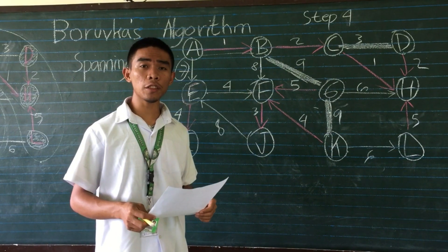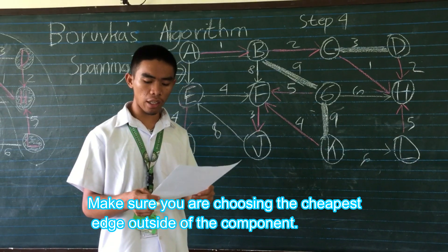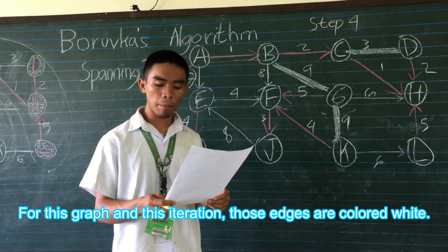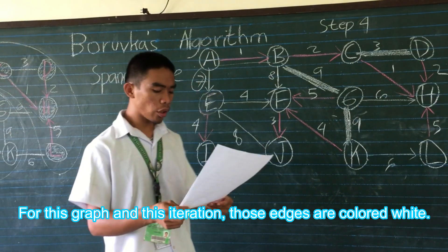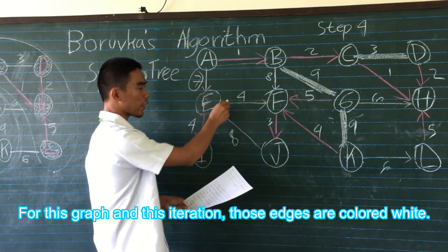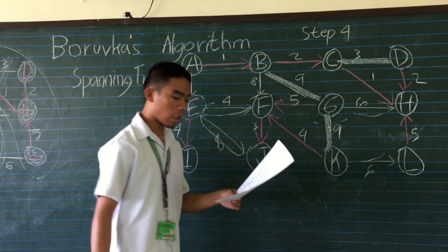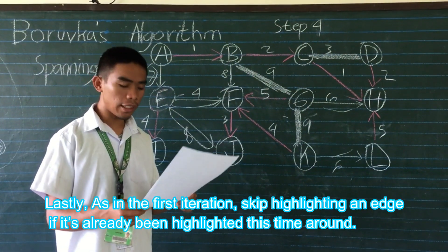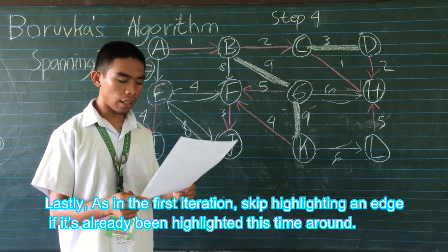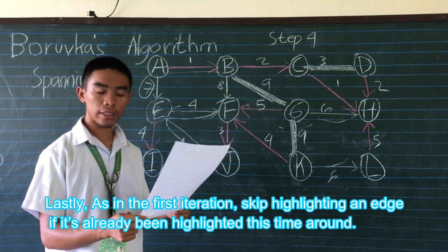The guidelines for Step 4: make sure you are choosing the cheapest edge outside of the component. For this graph and this iteration, those edges are the tin-colored white ones. Lastly, as in the first iteration, skip highlighting an edge if it has already been highlighted this time around.